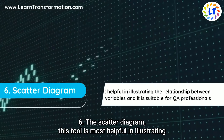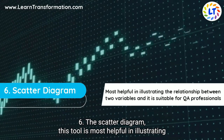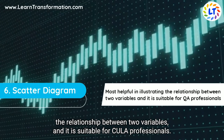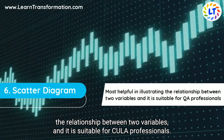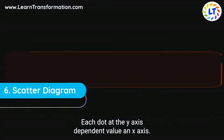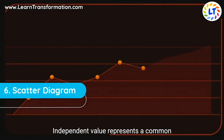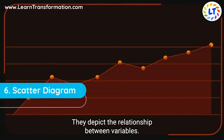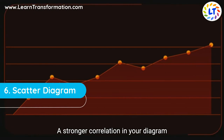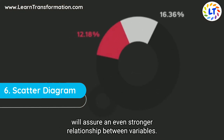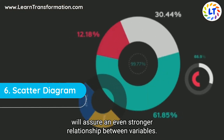The sixth tool is the Scatter Diagram. This tool is most helpful in illustrating the relationship between two variables and is suitable for QA professionals. Each dot at the Y-axis and X-axis represents a common intersection point. When these points are assembled, they depict the relationship between variables. A stronger correlation in your diagram assures an even stronger relationship between variables.